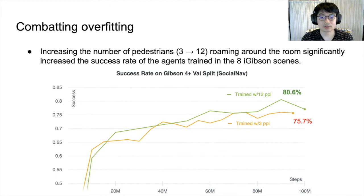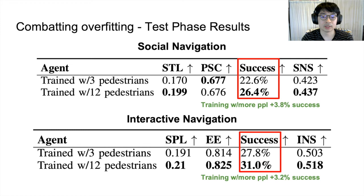To mitigate this issue, when training on only the eight allowed iGibson scenes, we found that increasing the number of pedestrians roaming around the environment helped to significantly increase the success rate on previously unseen scenes from the Gibson 4 plus val split. Training with 12 pedestrians rather than three also proved to yield better performance on the test phase for both social and interactive nav.